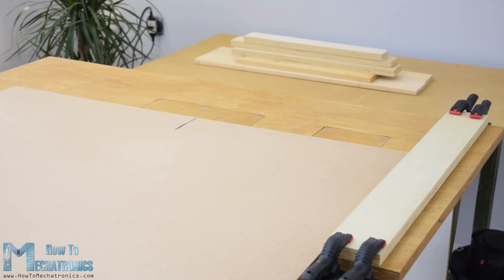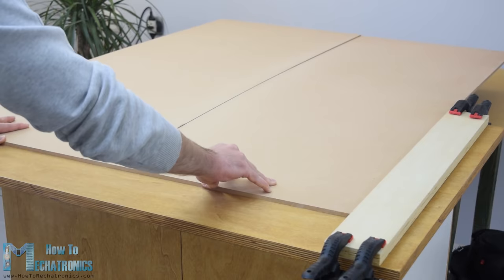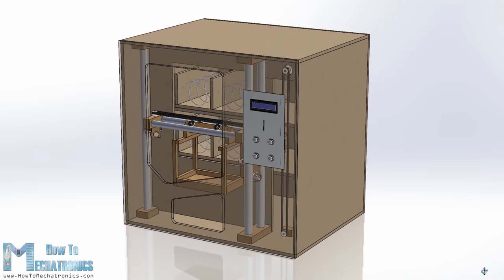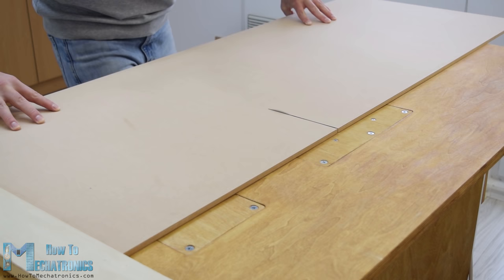I started by cutting the 8mm thick MDF board to size. I previously made a 3D model of the machine from where I got all the measurements. You can find and download the 3D model on the website article. For cutting the MDF I used a circular saw.